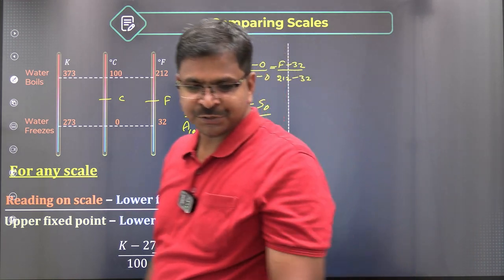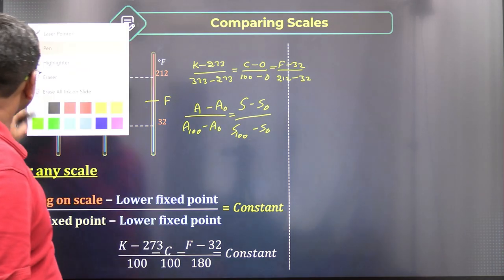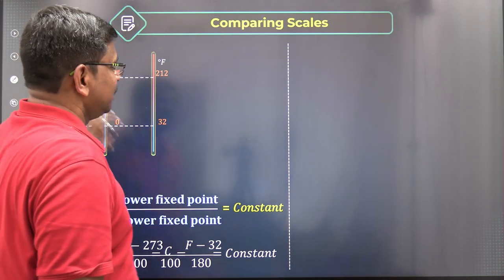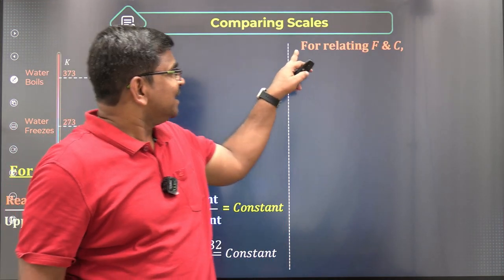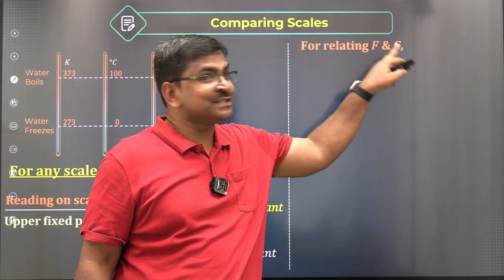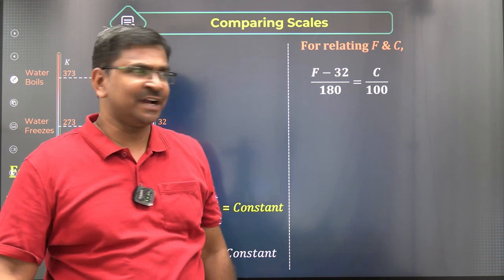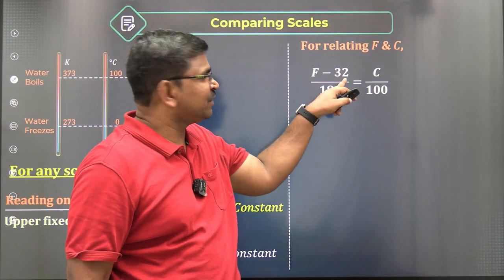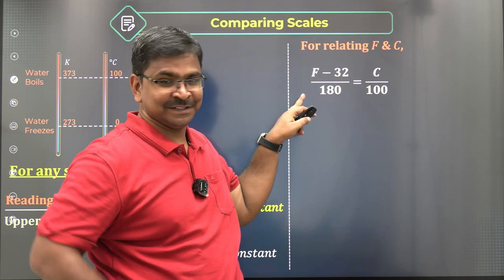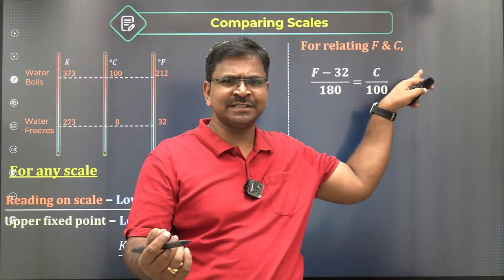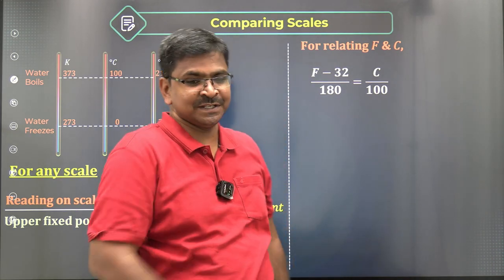I hope you understood. Let me focus on the conversion now. For conversion of Fahrenheit to Celsius and Celsius to Fahrenheit: I know that (F minus 32) / 180 = C / 100. From this expression I can write the conversion between F and C.